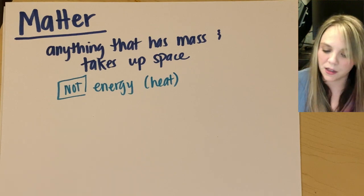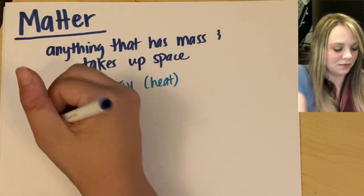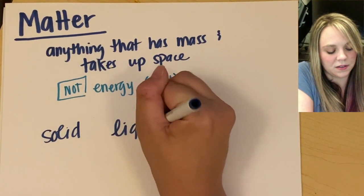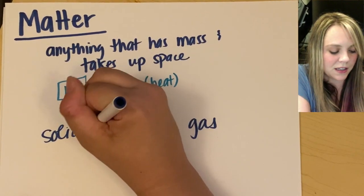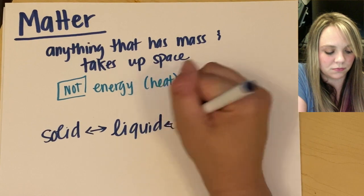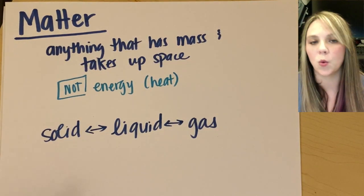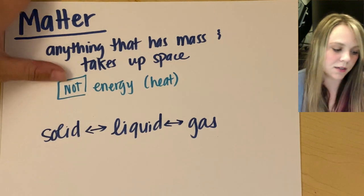All right, there are three common states of matter, which would be solid, liquid, and gas. And matter can change between the three states. Easiest thing to think about is like an ice cube can melt into water, water can evaporate into gas. And let's look at them.